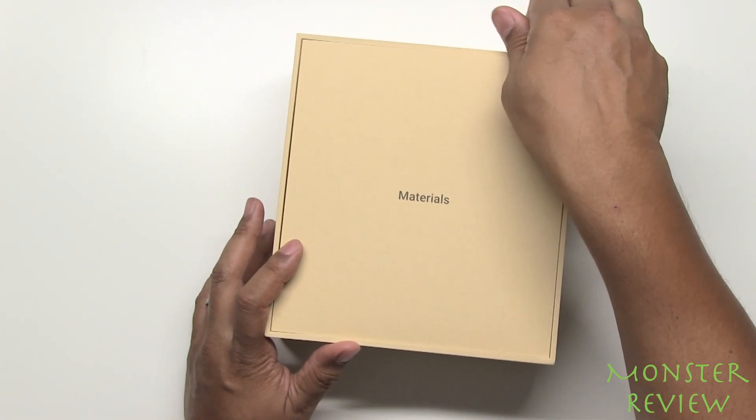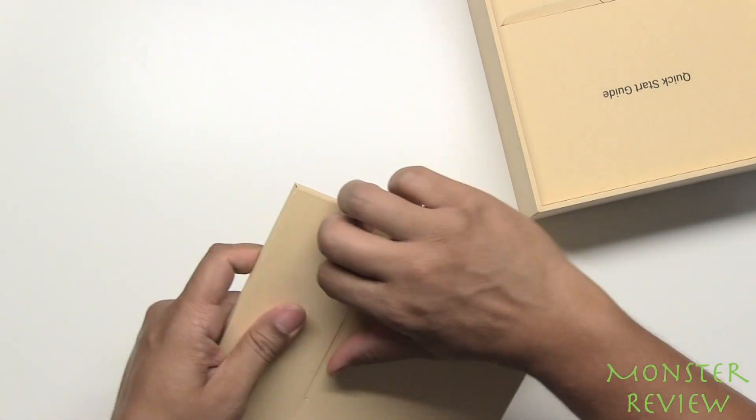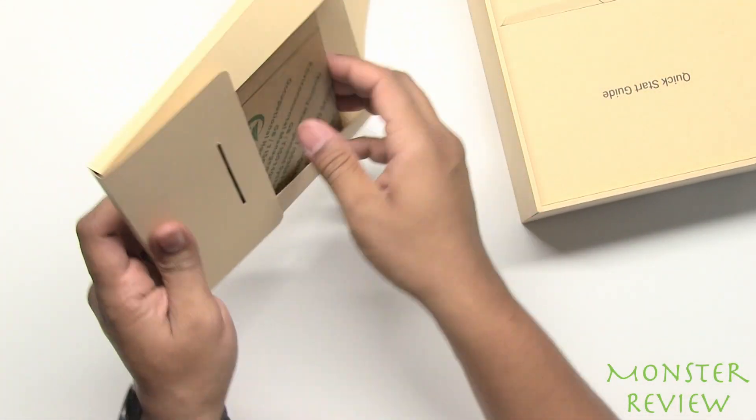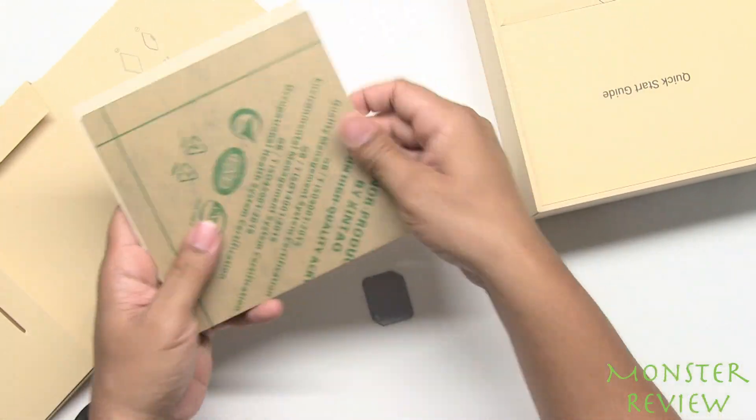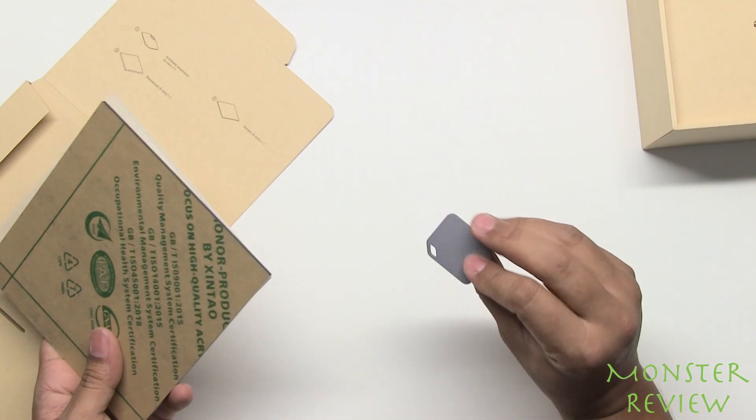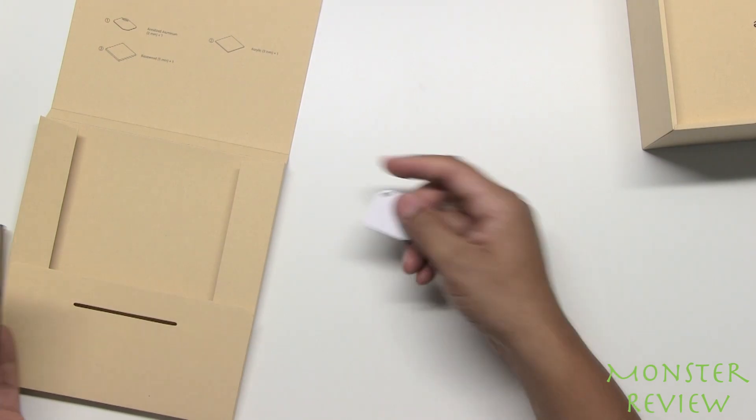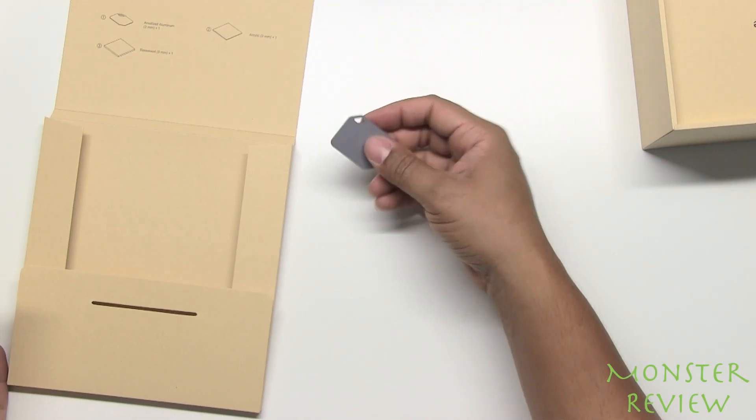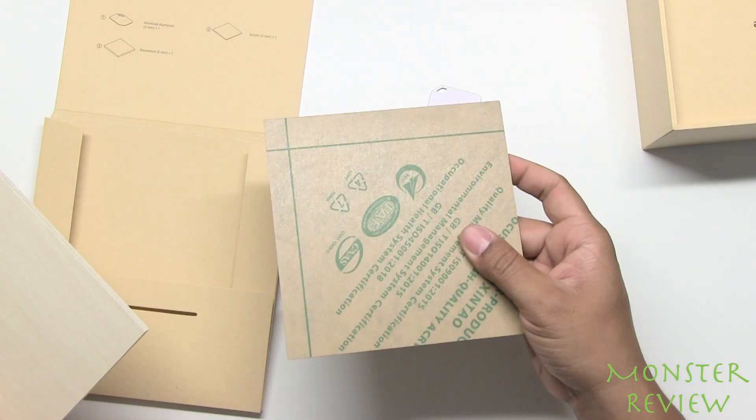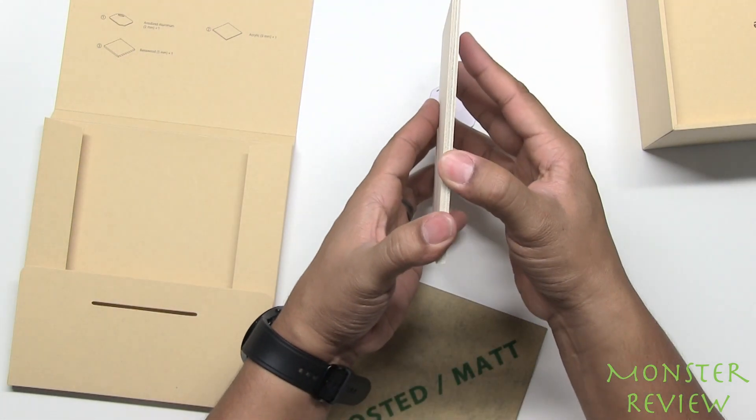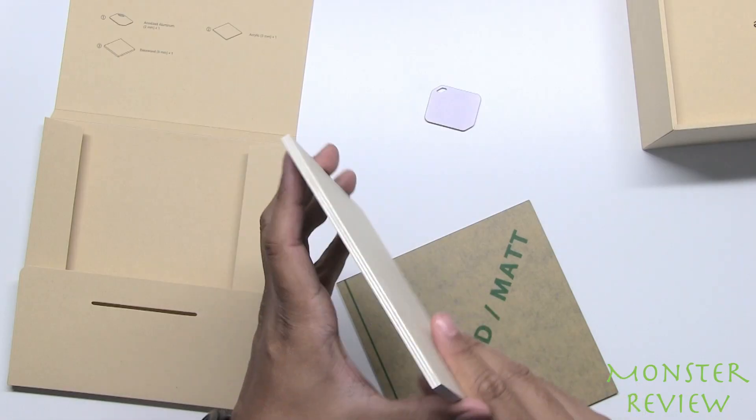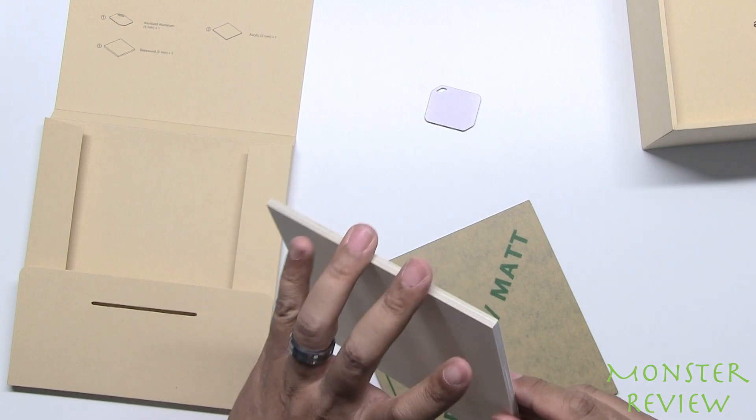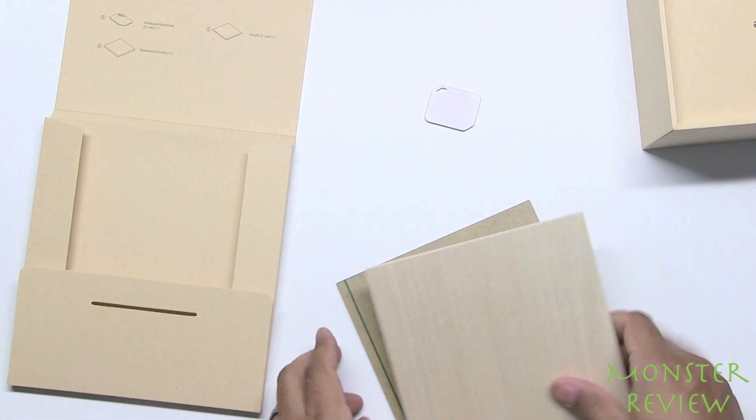Right, so the first thing we have is a materials box. Box is really tight. So we got an aluminum plate, anodized aluminum, acrylic, and base wood. It's a lot thicker than the base wood that comes with the 1600 milliwatt laser.